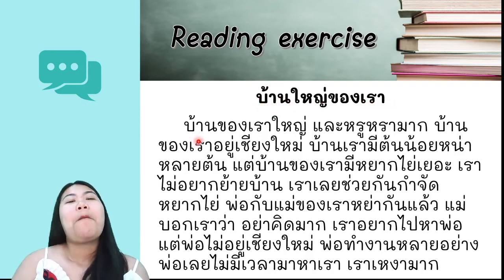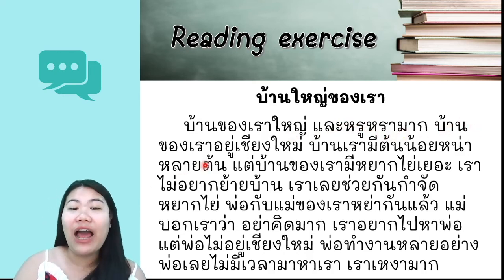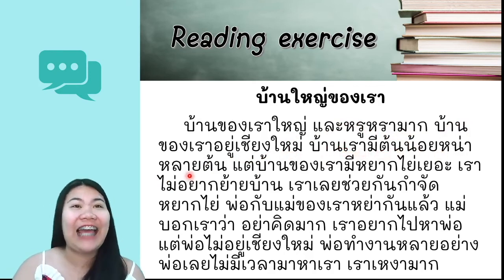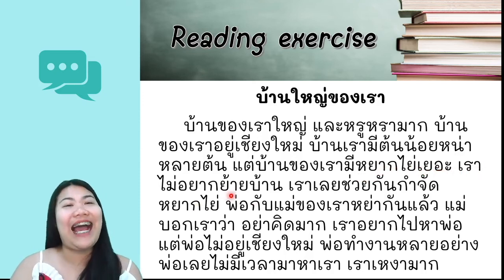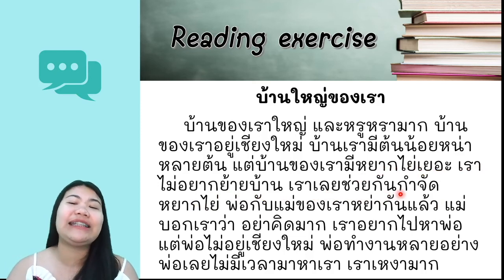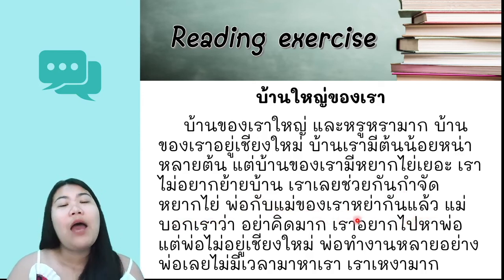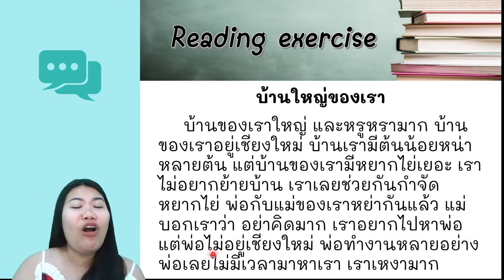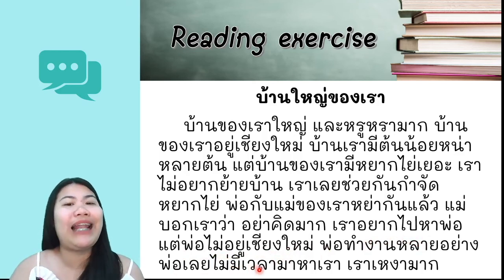บ้านใหญ่ของเรา — Our Big House. บ้านของเราใหญ่และร่มรื่นมาก — our house is big and very shady. บ้านของเราอยู่เชียงใหม่ — our house is in Chiang Mai. บ้านเรามีต้นไม้หลายต้น — our house has many trees. แต่บ้านของเรามีหนูใหญ่เยอะ — but our house has many large rats. เราไม่อยากจากบ้าน — we don't want to leave the house. เราเลยช่วยกันกำจัดหนูใหญ่ — so we helped each other get rid of the large rats. พ่อกับแม่ของเราแยกกันแล้ว แม่บอกเราว่าอย่าคิดมาก — our parents have separated; Mom told us not to think too much. เราอยากไปหาพ่อ — we want to go see Dad. แต่พ่อไม่อยู่เชียงใหม่ — but Dad is not in Chiang Mai. พ่อทำงานหลายอย่าง — Dad works many types of jobs. พ่อเลยไม่มีเวลามาหาเรา — so Dad doesn't have time to come see us. เราเหงามาก — we are very lonely.